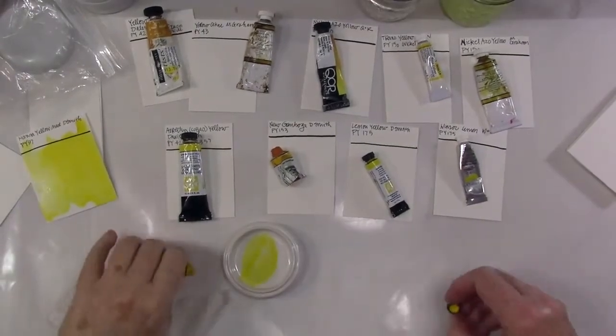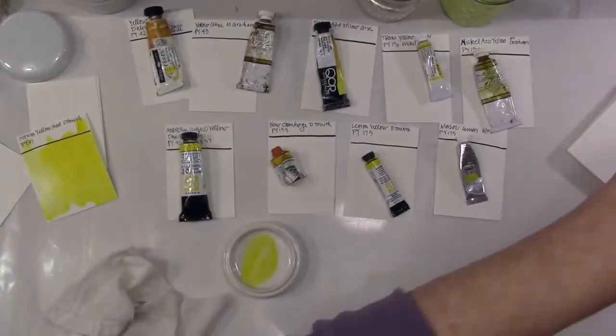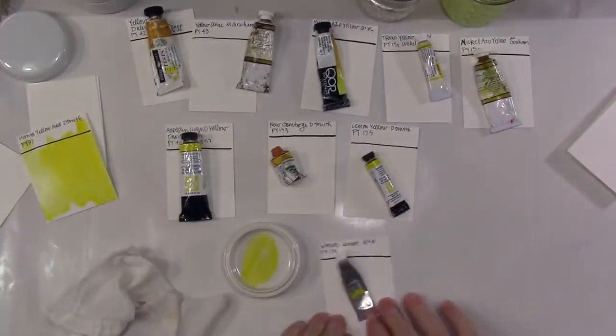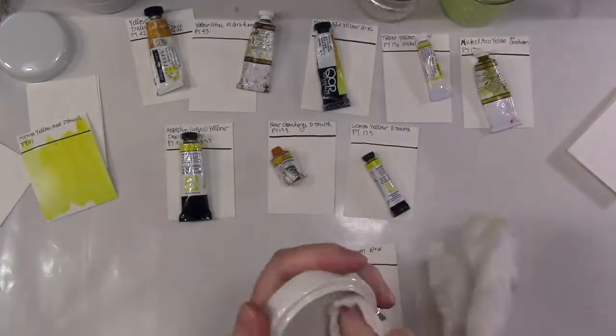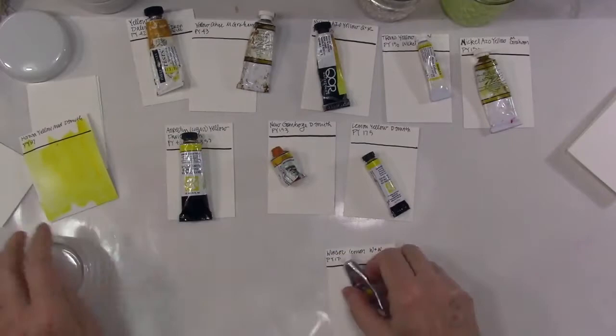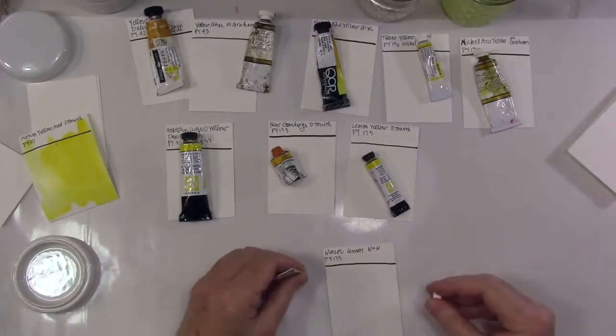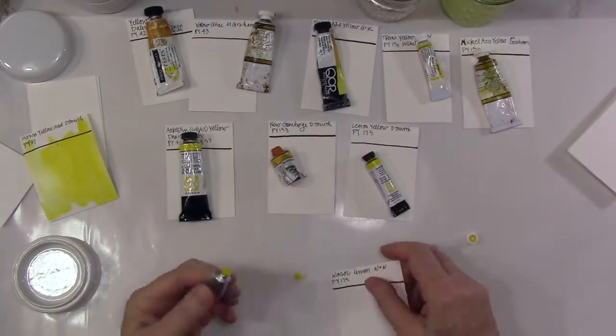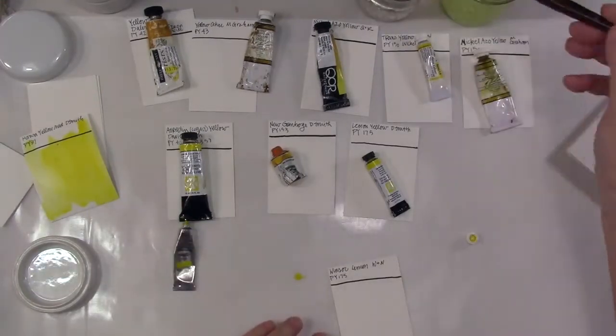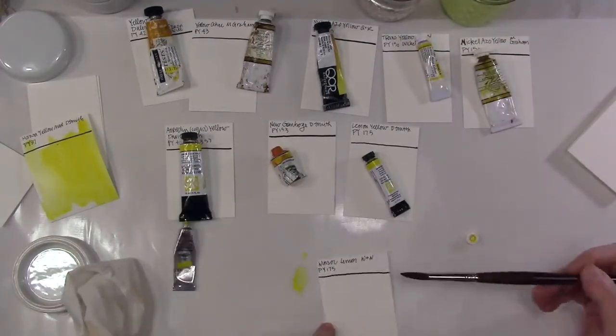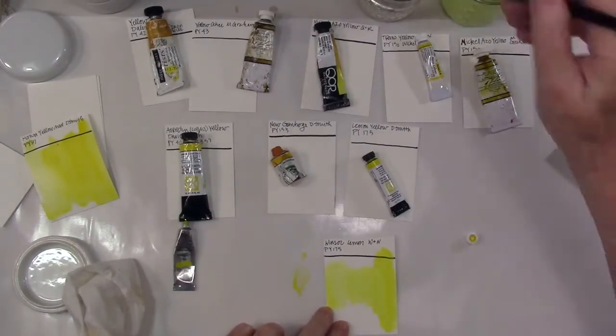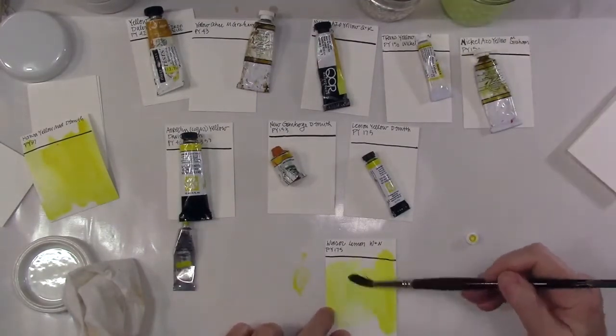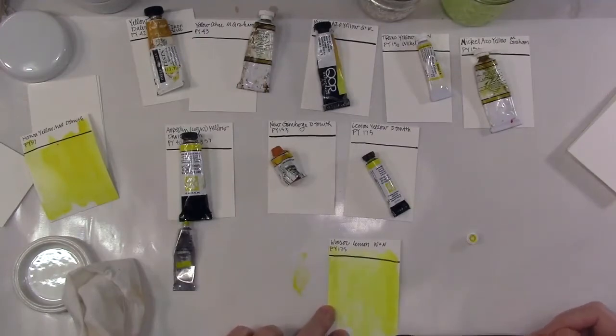I must have lost the footage there for that Hansa yellow medium, which is PY 97, which is a slightly warmer yellow. I'm going to do the lemon yellow now, and that's Winsor Newton yellow. That is Winsor Newton lemon, PY 175, and this is a really nice cool yellow. It's the perfect lemon yellow.